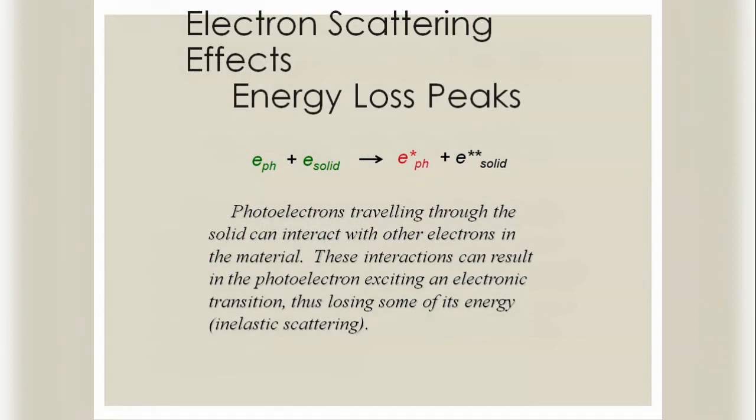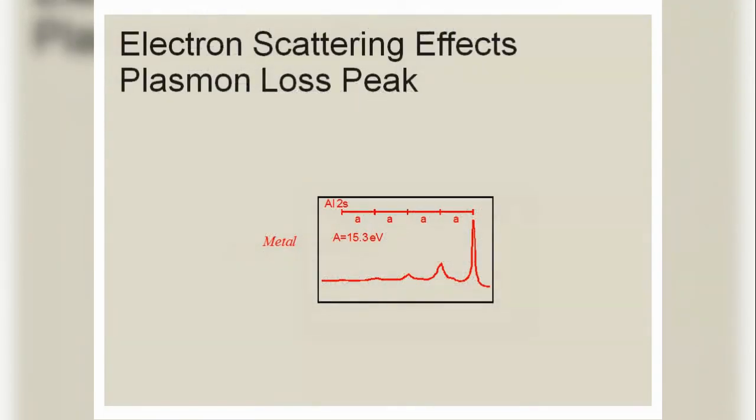Electron scattering effects produce energy loss peaks. E(e,ph) + E(solid) = E*(ph) + E**(solid). Electron scattering effects also cause plasma loss peaks.